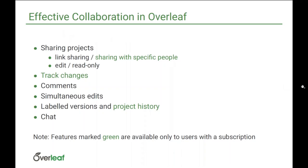There are several ways you can collaborate with Overleaf. The most important is that you can share your project with other users. There are basically two ways to do this: either you switch on what we call link sharing, which provides you with short or long links that you can share with colleagues so anyone with the link can join the project, or you can share with specific people based on their email addresses. Note that email-based sharing is available to users with a subscription; free users can share the project with only one more collaborator.